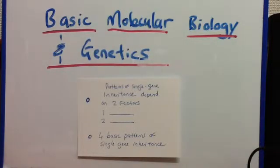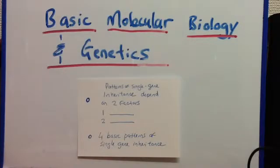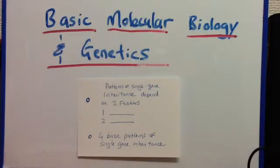So there are four basic patterns of single gene inheritance. First is autosomal recessive. Second, autosomal dominant. Third, X-linked recessive. And fourth, X-linked dominant.